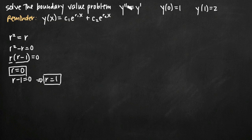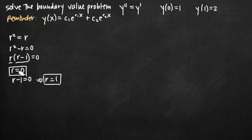When working with second order differential equations, you can get three types of roots: distinct real roots, equal real roots, and complex conjugate roots. These are distinct real roots because 0 and 1 are real numbers but distinct from one another. Equal real roots would occur if both roots were the same value, for example r equals 1 and r equals 1. Complex conjugate roots always involve the imaginary number i and are easy to spot. These are clearly distinct real roots.